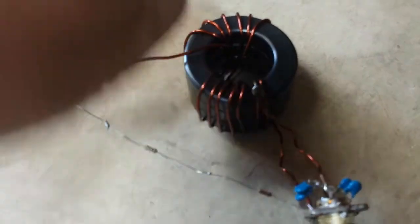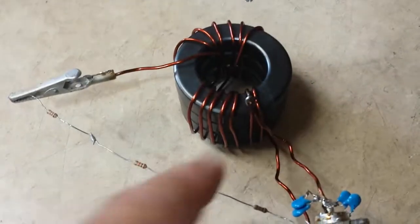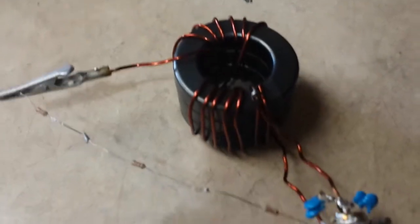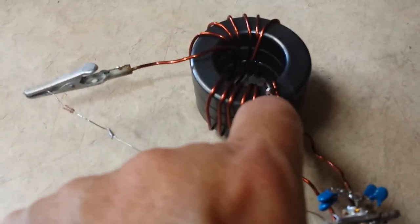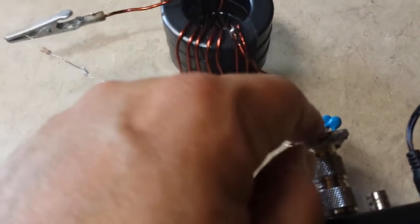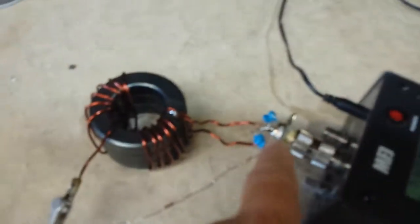So there's 7 here, 7 over here, and you do count the crossover as a turn. And then on the second turn, we put a tap, and that's what goes to the center of our coax.